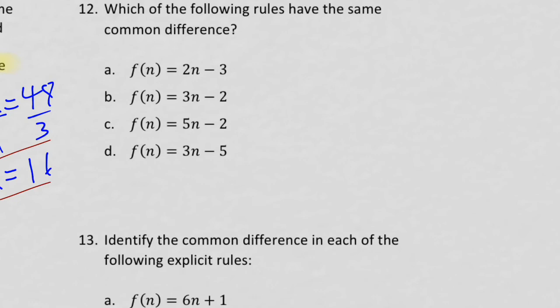Number twelve: which rules have the same common difference? The common difference is the number multiplied by n. Rule A has d = 2, Rule B has d = 3, Rule C has d = 5, and Rule D has d = 3. So B and D have the same common difference. If the question asked which rules have the same f(0), the answer would be A and C, since those share the same constant term.